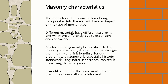The characteristics of the stone or brick being used will have an impact on the type of mortar needed. Different materials have different strengths and will move differently due to expansion and contraction. Mortar should generally be softer than the material around it — it needs to be sacrificial to the masonry. If it ends up being stronger than the material being built with, serious problems can result, especially with softer materials such as sandstone. It would also be rare to use the same mortar on a historic stone wall and a modern brick wall, so understanding the age of a building is important.